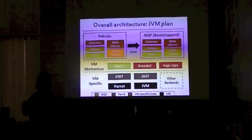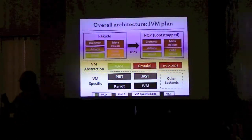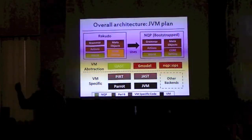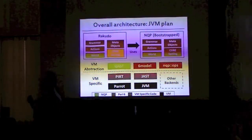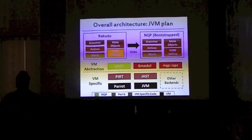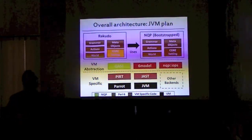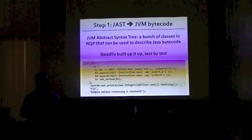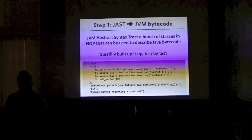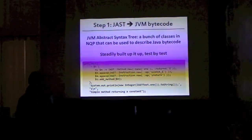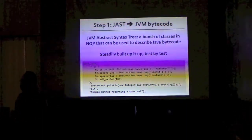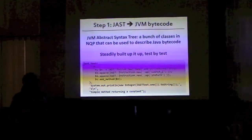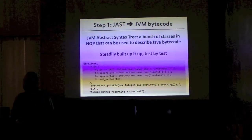We don't actually have a separate 'Rakudo on JVM' repository — it's all in one repository, with the special things just sectioned off into the odd directory. So how did this go? Basically, this all started when I figured it was time to actually work on this, and I quietly started building up something called JAST — the JVM Abstract Syntax Tree.